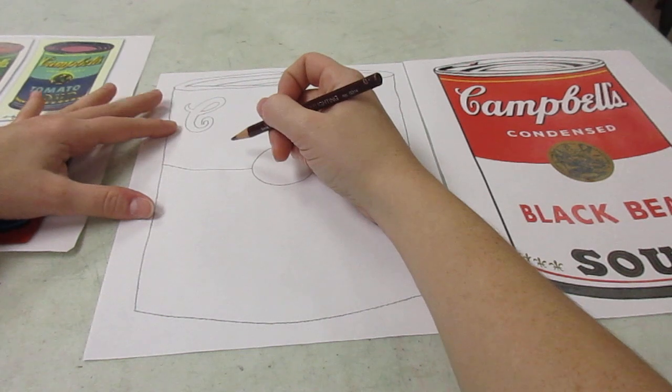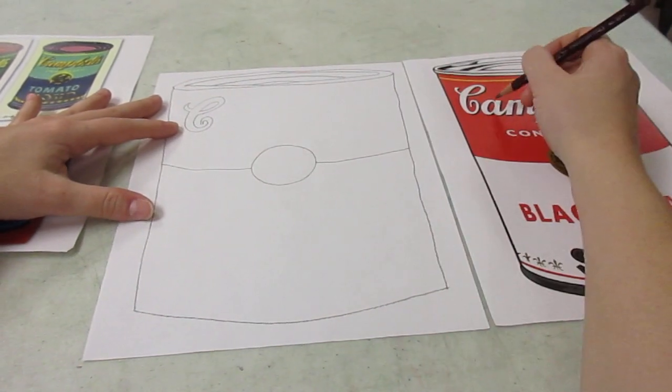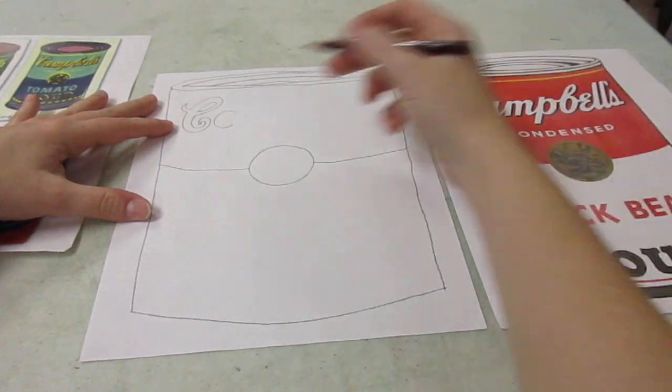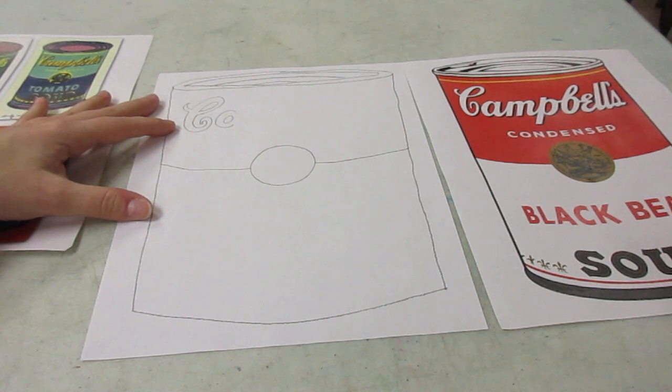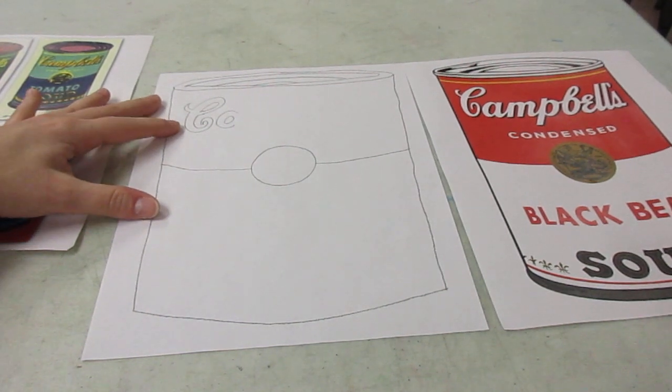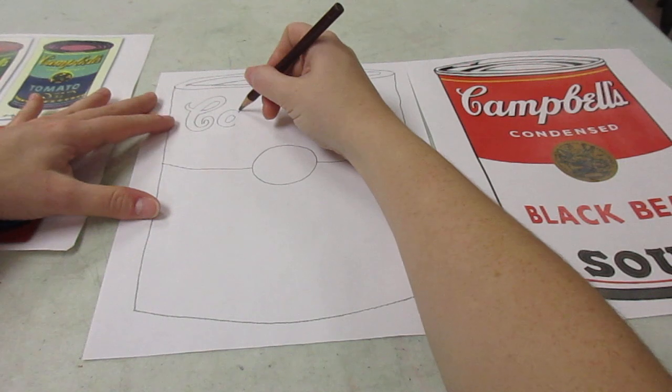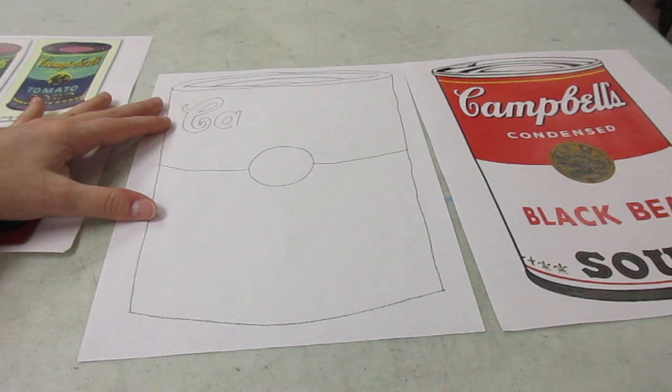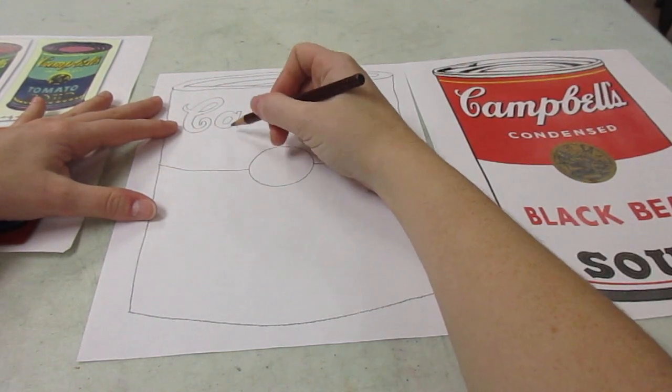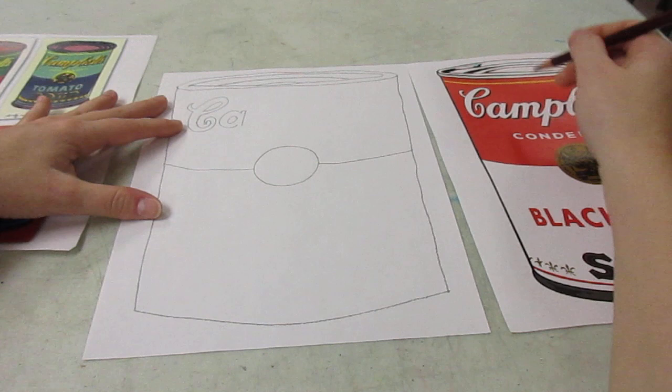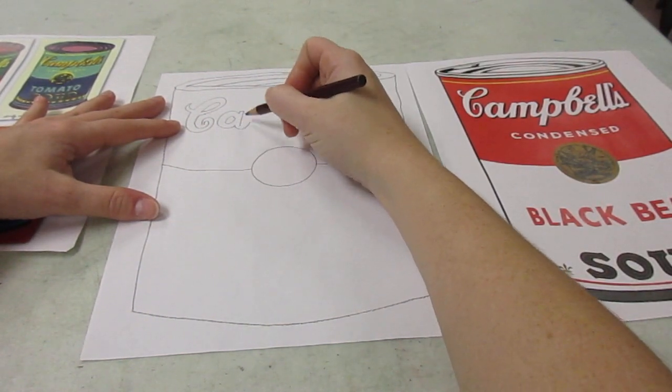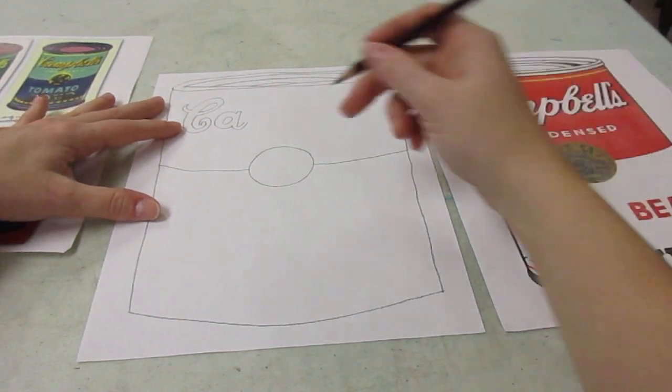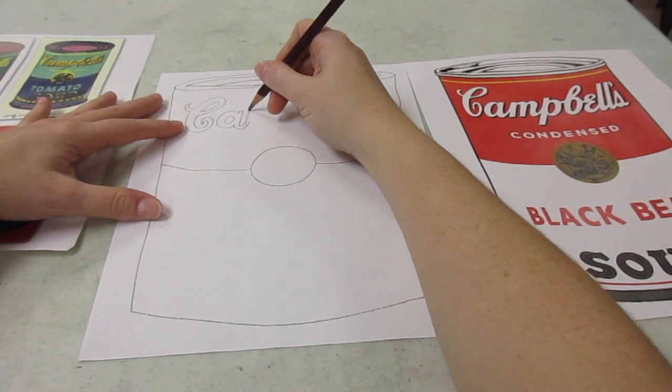Okay. Now to make the A, we're going to make a big loop, and we're going to make an oval inside. Okay. Then we're going to make a little rectangle here, but we're going to stop. Then we're going to connect the A to the M, because like I said, it's kind of cursive. So you're going to connect this over here. And go up, make another rectangle.